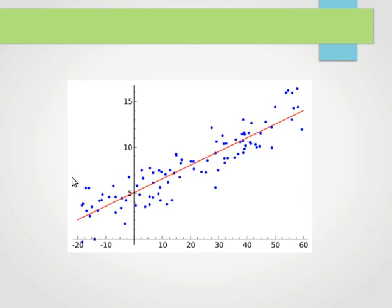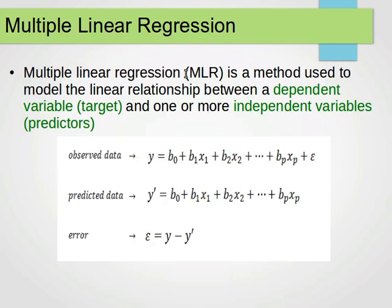In this video and the next one, we'll be focusing on multiple linear regression, or MLR. MLR is a method used to model the linear relationship between a dependent variable, or target, and one or more independent variables, or predictors. The predictors or features are the independent variables, and the value we're trying to guess is called the target or the dependent variable.